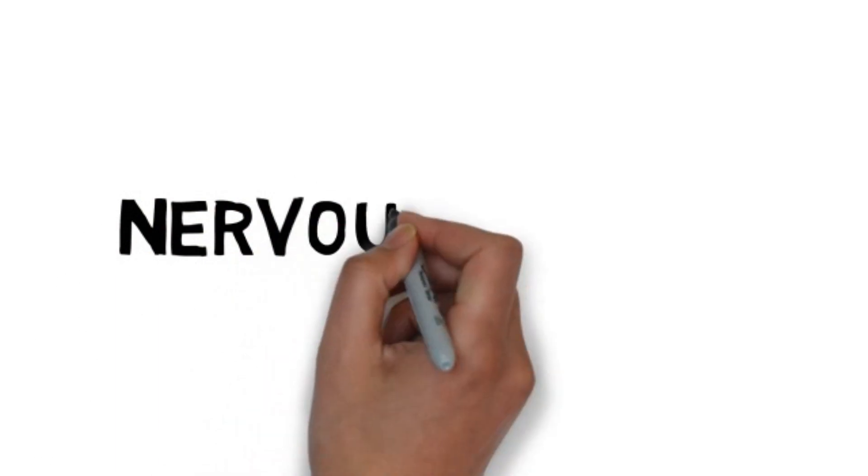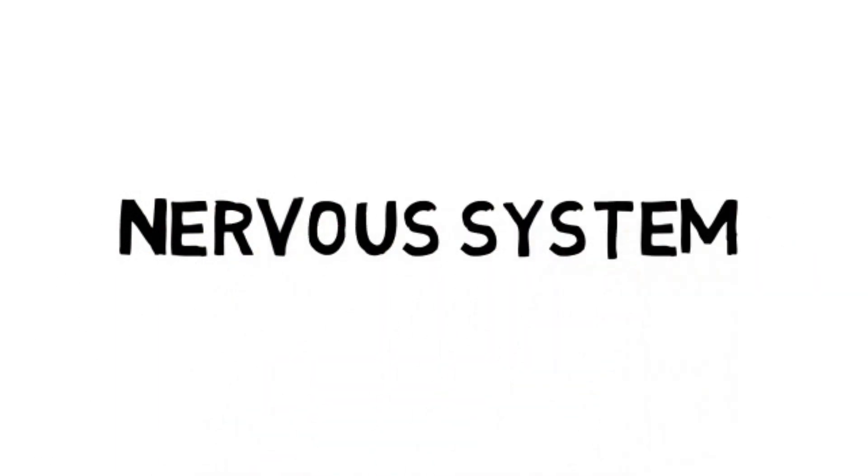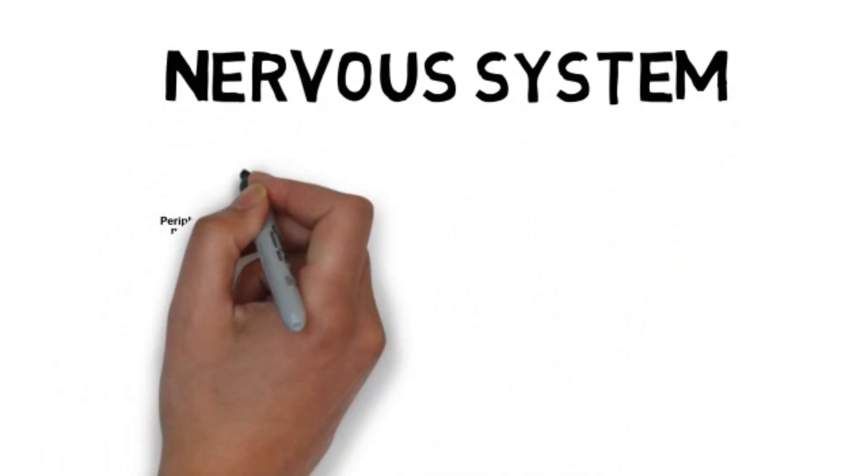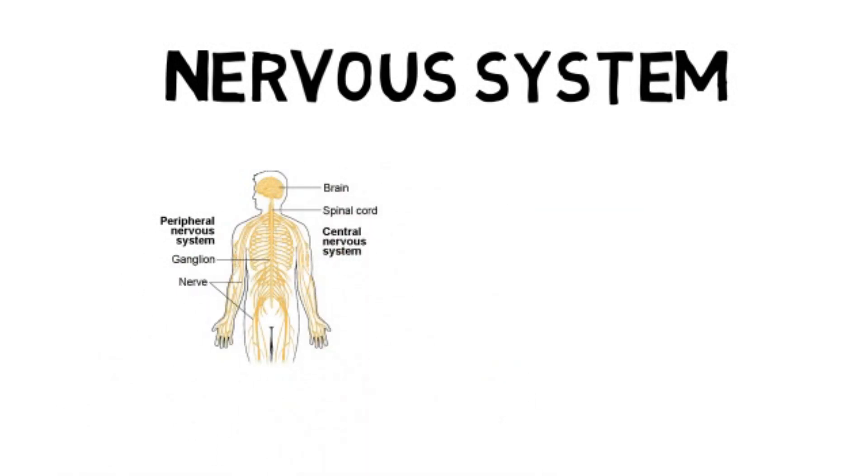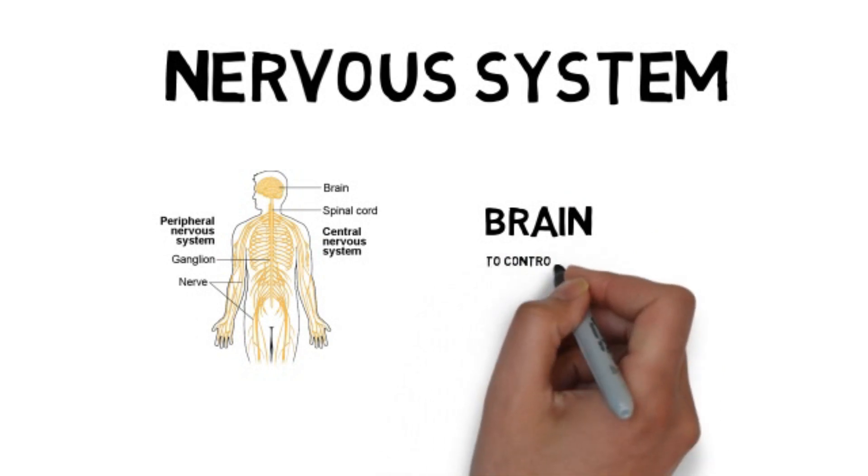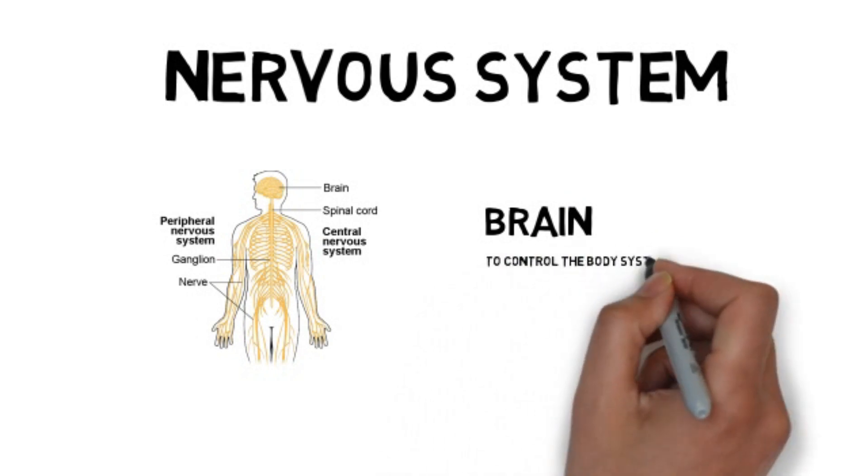The first system that we're going to talk about is the nervous system. Look at the picture. This is the parts of our nervous system, but the major organ of this system is the brain, and the function is to control the body system.